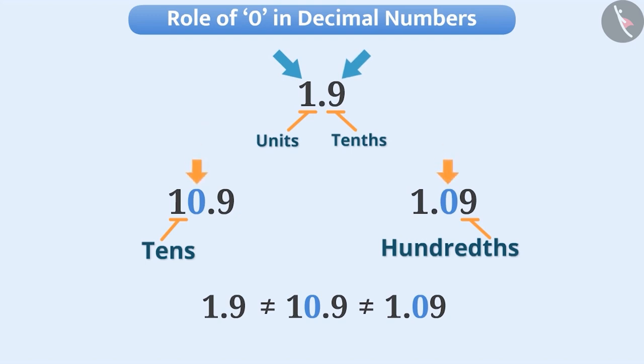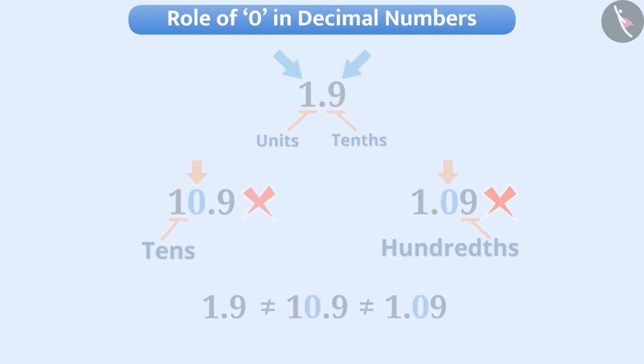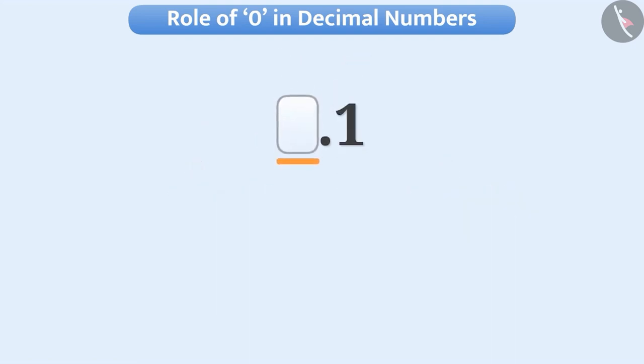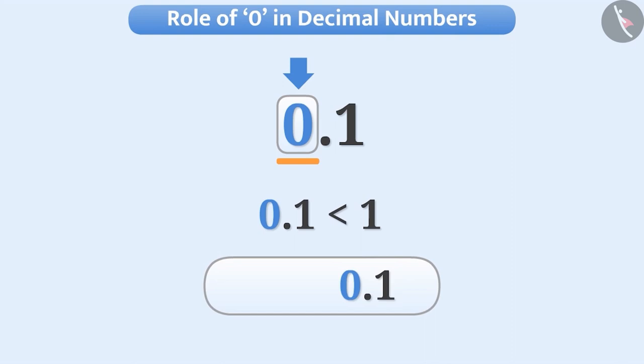So make sure that we do not place zero at any place in the middle of the first and the last non-zero digit in any number. In general, if there is no digit to the left side of the decimal point, then we keep zero to the left of the decimal point. The number zero before the decimal point represents that the number is smaller than 1. So either we write .1 or 0.1, the value of both is the same.